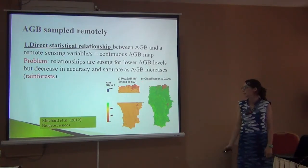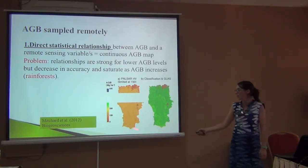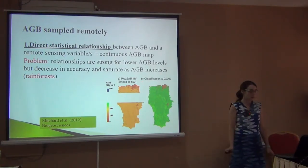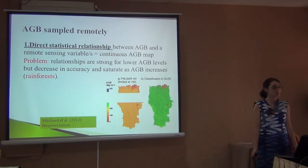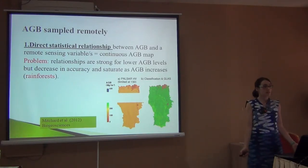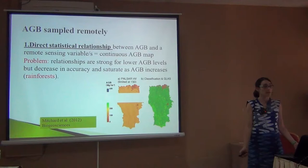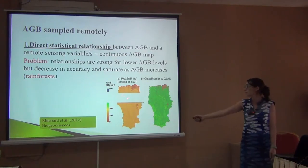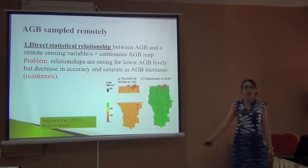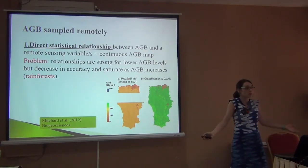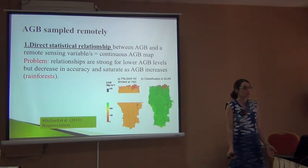This is Lope National Park in Gabon. What is the problem? The first problem is that sometimes these sensors didn't collect data from certain areas. You see — this sensor has no data from part of the park. So we simply cannot use it.